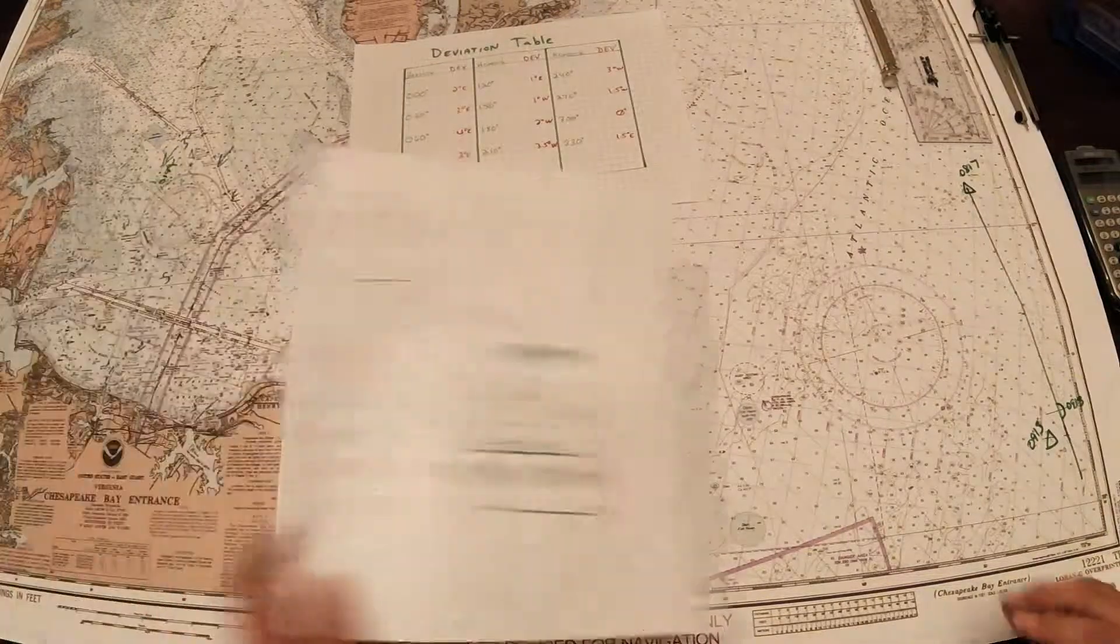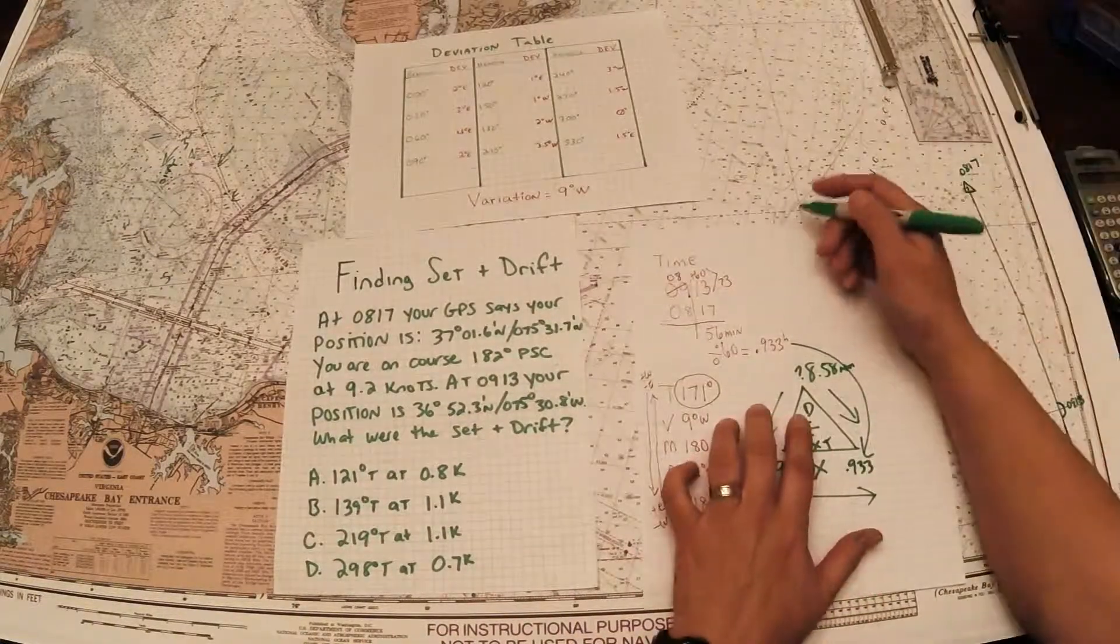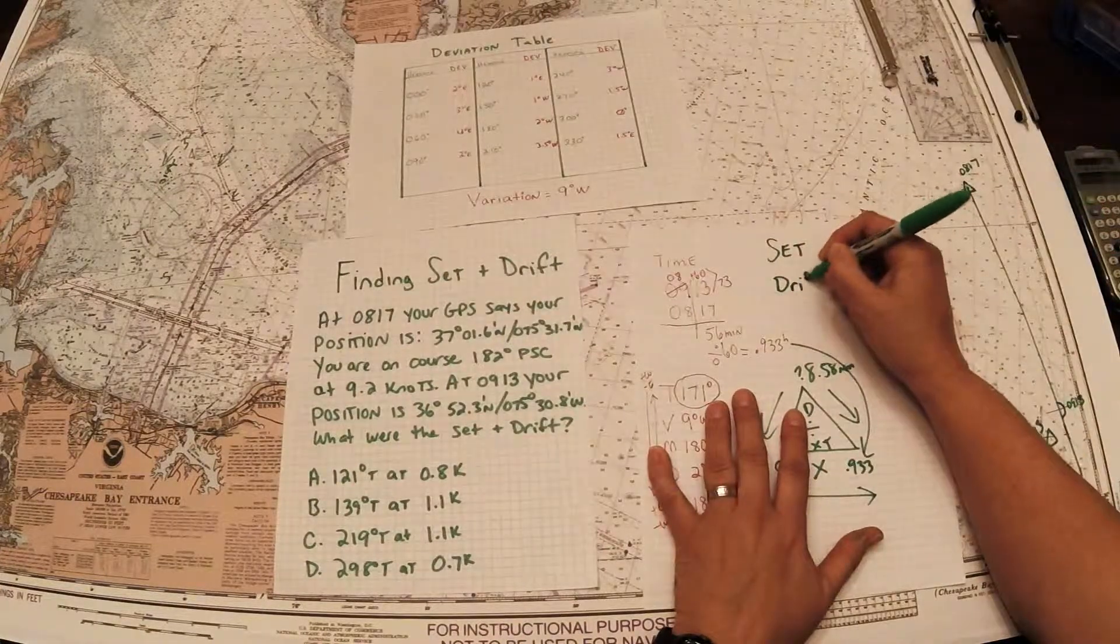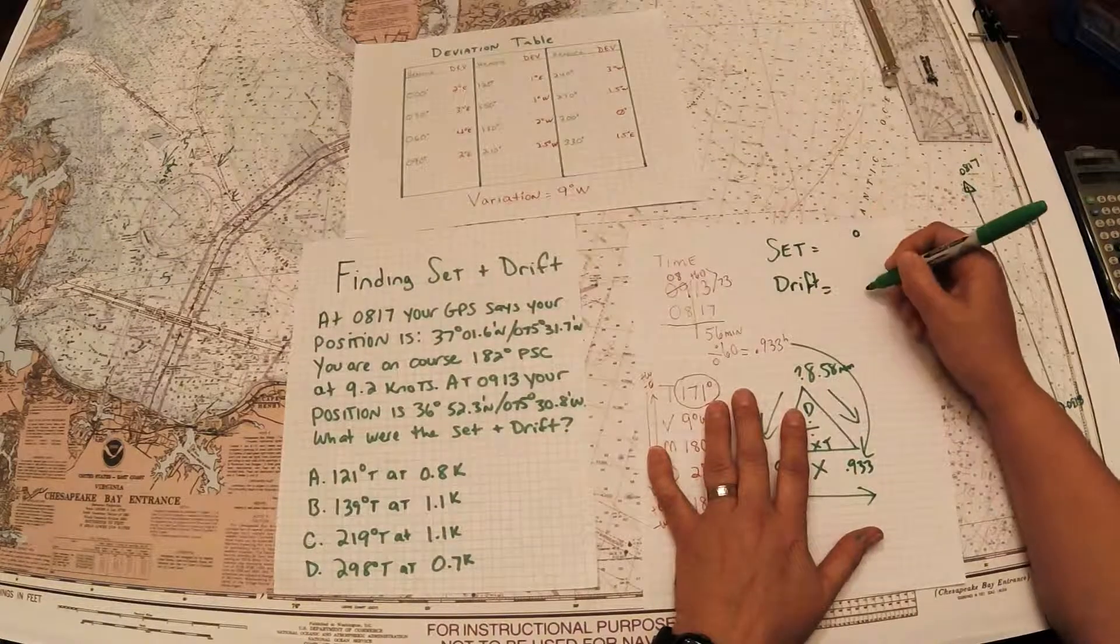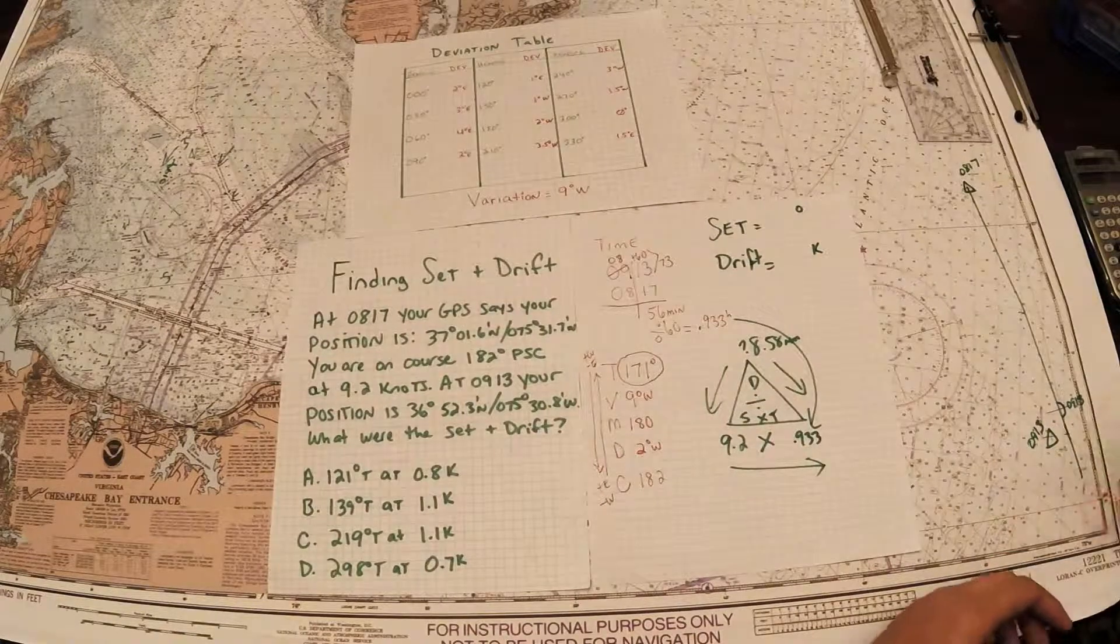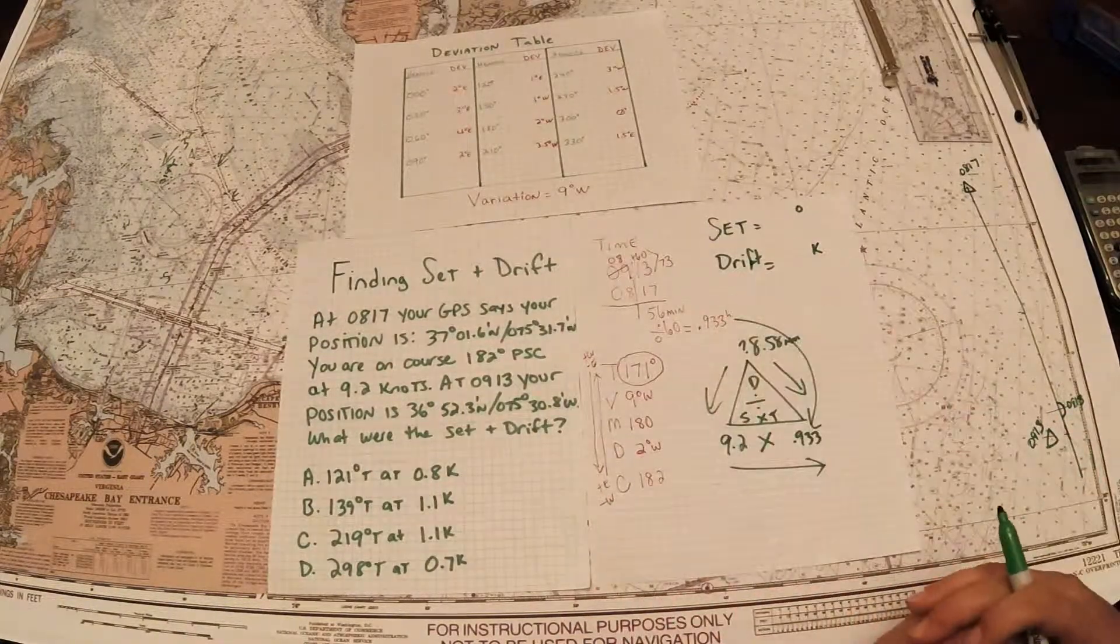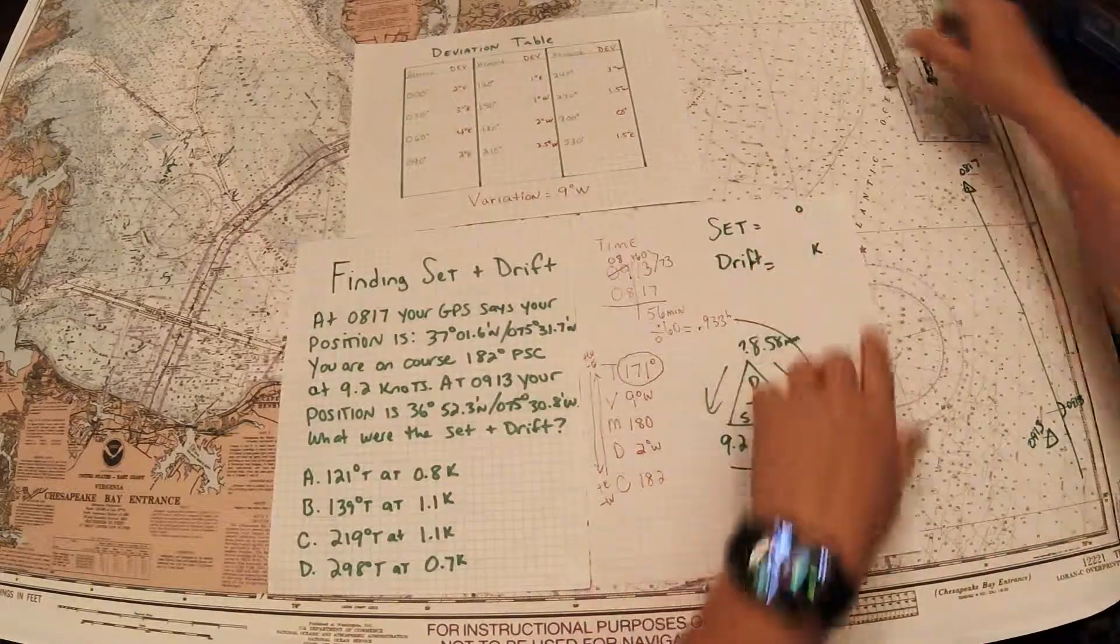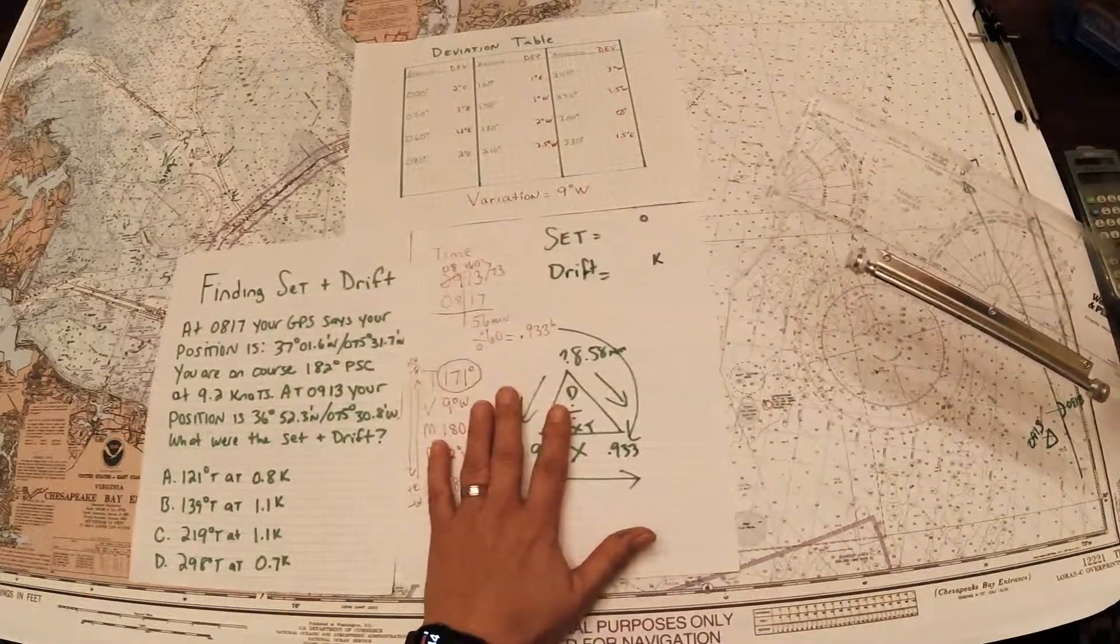Set is direction, drift is speed. It's very important to understand those two because sometimes people will just measure the distance and put that as drift, and drift is not distance, it's speed, it's the velocity of the current. For direction I need to use something that measures direction, right? The first thing you're going to do is always measure from DR to the fix, from the DR to the fix.